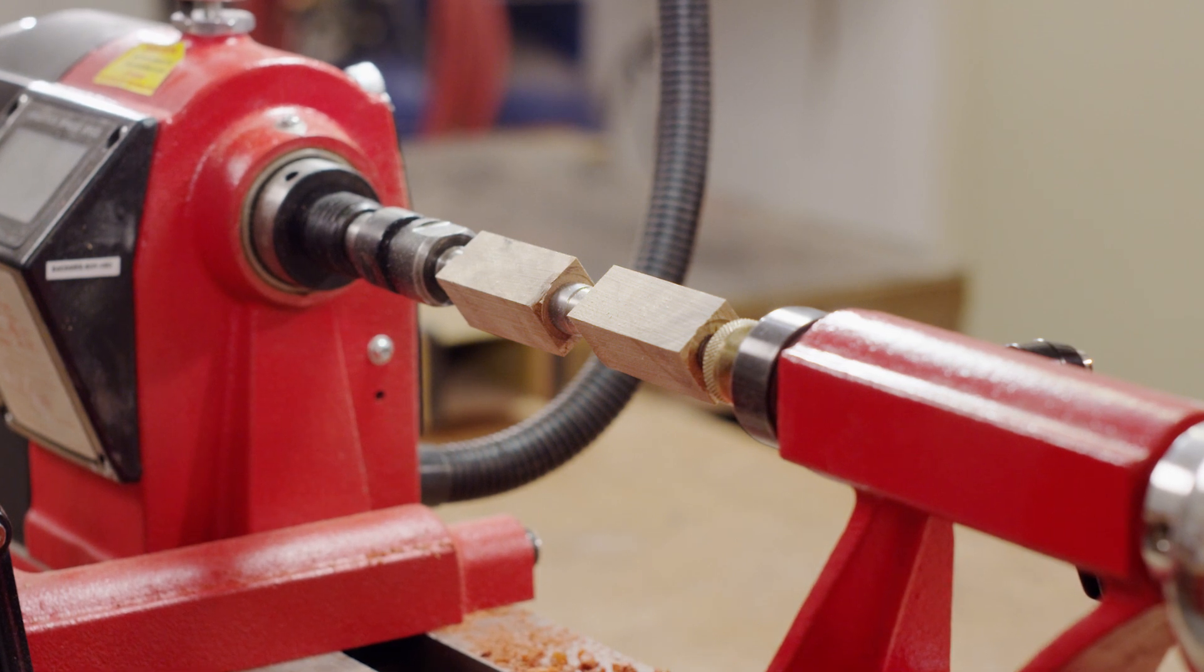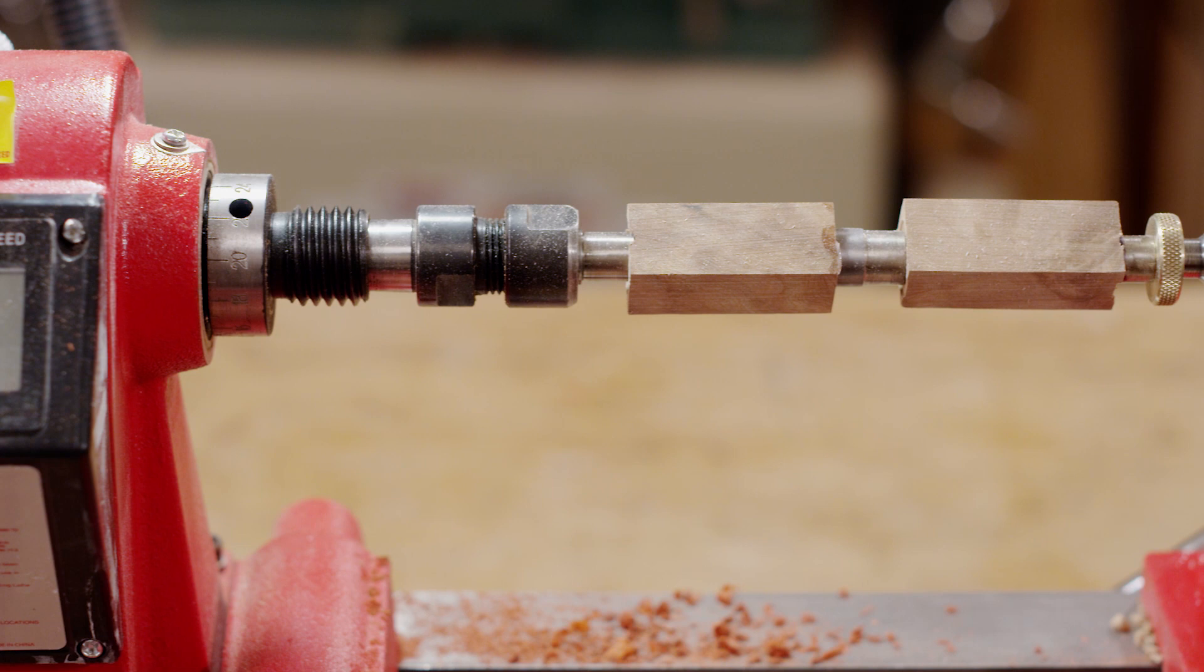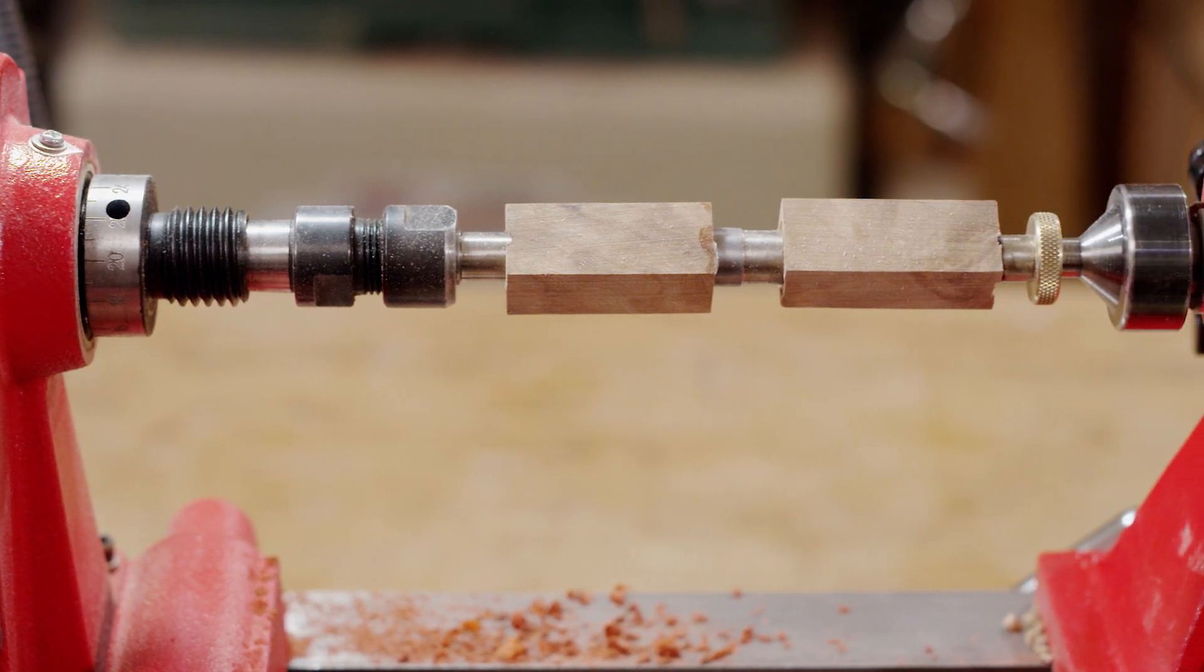Once you've squared your pen blanks, you'll need to insert the blanks and bushings onto a pen mandrel. The mandrel mounts between centers on the lathe and supports the blanks for when you turn them to shape.